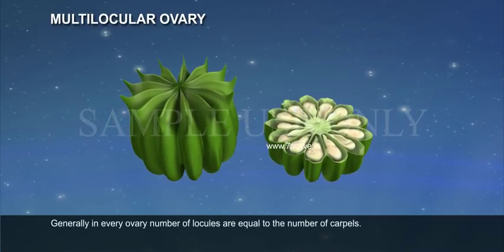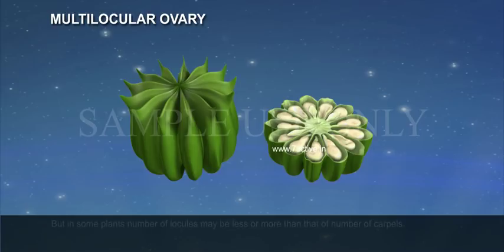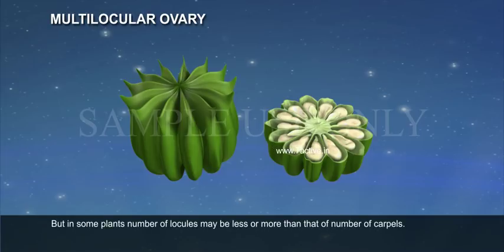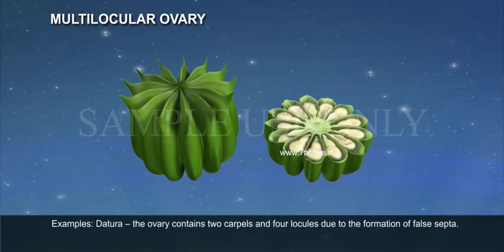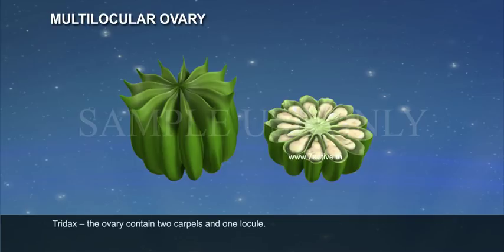Generally, in every ovary, the number of locules is equal to the number of carpels. But in some plants, the number of locules may be less or more than that of the number of carpels. Example: Datura — the ovary contains two carpels and four locules due to the formation of false septa. Tridax — the ovary contains two carpels and one locule.